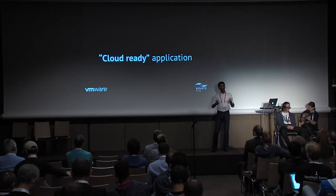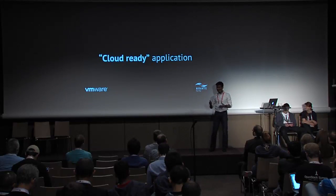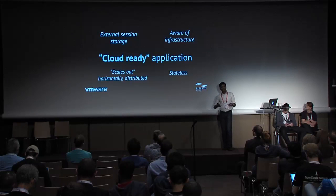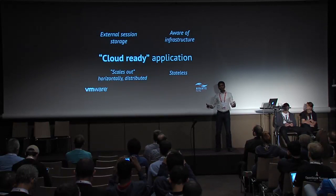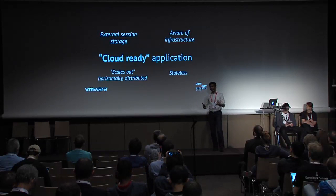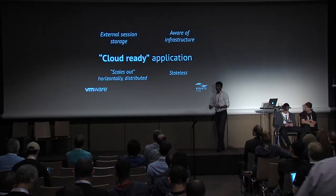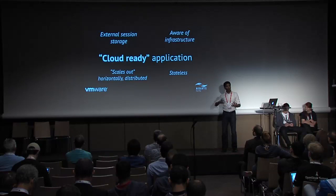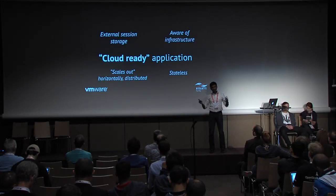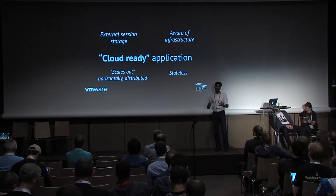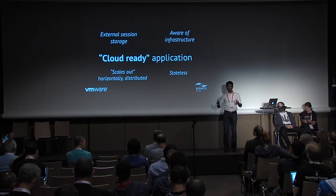You can classify applications broadly into two types. First, cloud-ready applications: these are aware they're running on cloud infrastructure and exploit this to be massively distributed. Based on demand, they can automatically scale out — spin up more instances when demand is high, scale down when it's low. They are stateless, with no local data or local cache, which gives them implicit HA. If an instance goes down, the application automatically spins up another with no downtime.